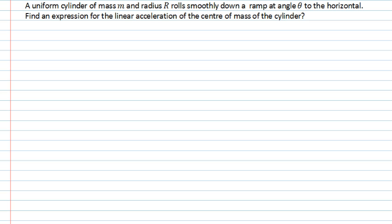In this viscast, we're going to consider the motion of a uniform cylinder of mass m and radius R as it rolls smoothly down a ramp at angle θ to the horizontal.